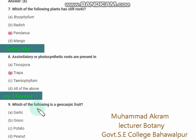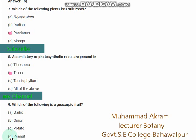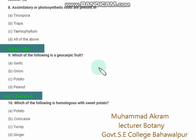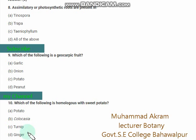Which of the following is a geocarpic fruit? A geocarpic fruit among these options is peanut — the right option is option D. Which of the following is homologous with sweet potato? The right option is option C — turnip.